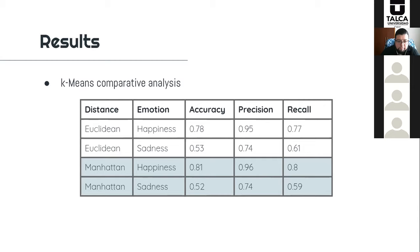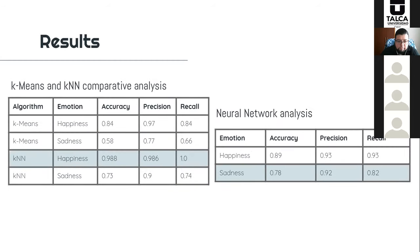We also analyzed the feature values used with K-means and verified that some features had very redundant descriptions of the detected face. So we disregarded three of these features and obtained better results, as shown in this table — especially for the sadness emotion. The comparative analysis between K-means and K-nearest neighbors algorithms showed better results with K-nearest neighbors for classification, with 98% precision for happiness emotion and 90% for sadness emotion.